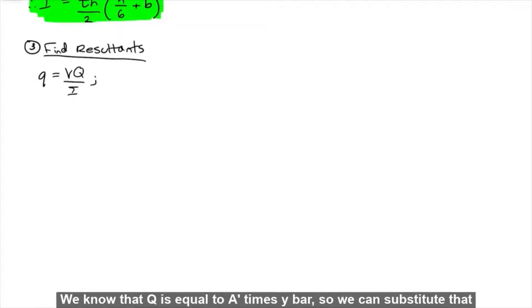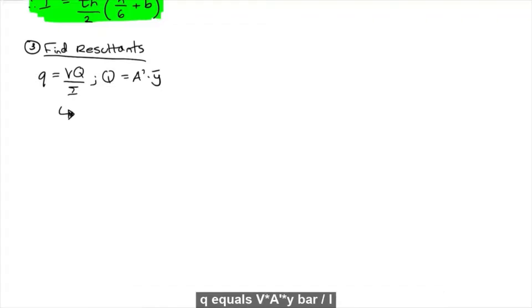Now that we have our moment of inertia, we can find our resultant forces. We can use a shear flow equation, which is Q equals VQ over I. We know that Q is equal to A prime times Y bar, so we can substitute that into our shear flow equation, which will then be equal to Q equals V times A prime times Y bar divided by I. We will treat V as a constant.